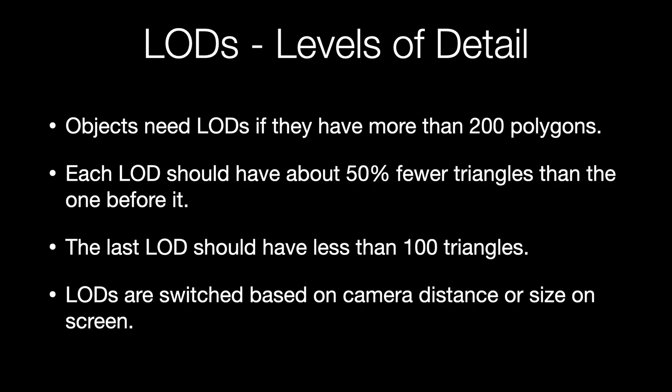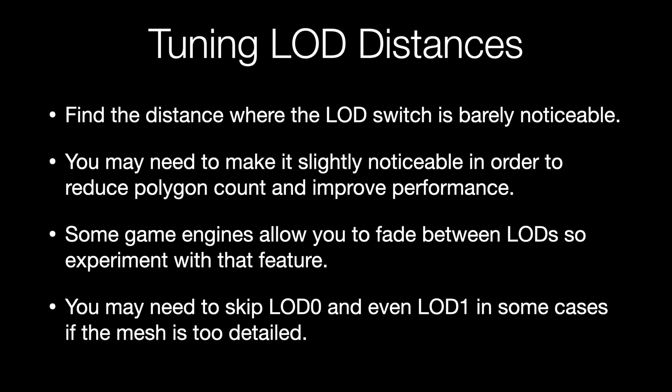If all your objects have LODs and LOD switching is working correctly but your polygon count is still too high, the next thing you can do is adjust the distances where those LODs switch — make them switch to lower detail meshes a little closer to the camera. There's a balancing act here because the lower detail meshes don't look as nice, and the closer the switch happens the more obvious it is, so you have to do careful tuning to find the sweet spot. Some game engines have a system that blends or fades between LODs, which is something you could also try.